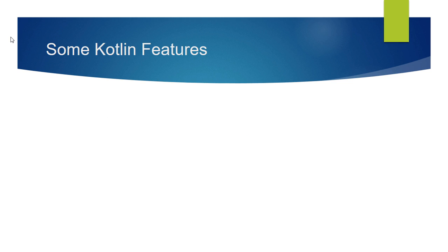Some Kotlin features: Java has a lot of boilerplate code in its structure. Using Kotlin, we can get rid of this, which will help to increase the readability and understandability of our code. Null safety: in Java, more than 40% of errors occur because of null pointer exceptions. Kotlin provides null safety to avoid null pointer exceptions.